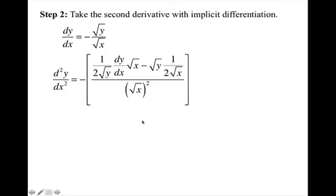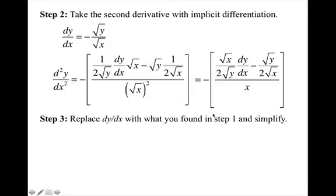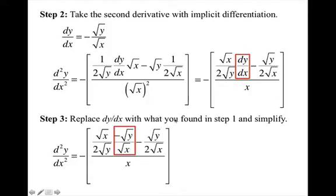I can do some simplifying. I put the square root of x on top of 2 square root y, and square root of y on top of 2 square root of x, and the square and square root cancel on the bottom. Now, replace the dy/dx with the first derivative found in step 1 — which we found was negative square root y over square root x.